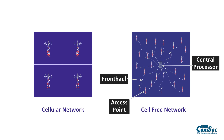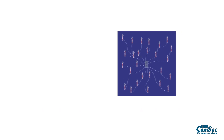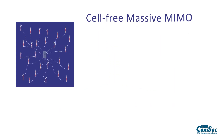The idea is that all these access points are serving all of the users in this area jointly, so there is no concept of cells. This has been known as cell-free massive MIMO, where massive MIMO means we have a lot of antennas, a lot of users, and here we have very many access points with many antennas.